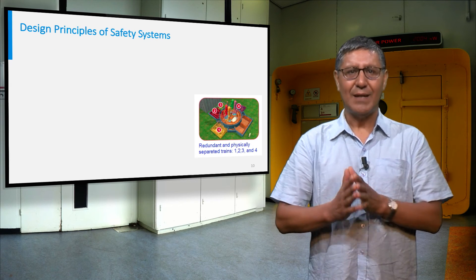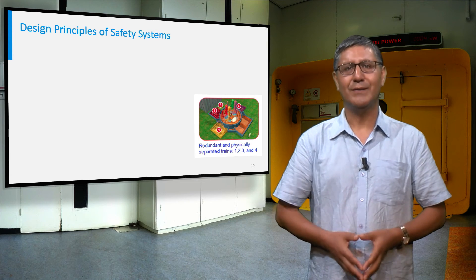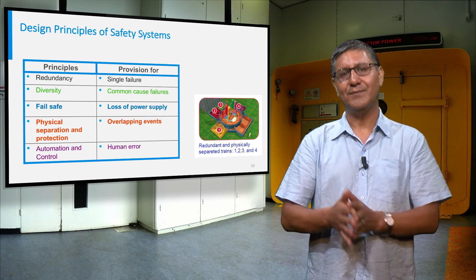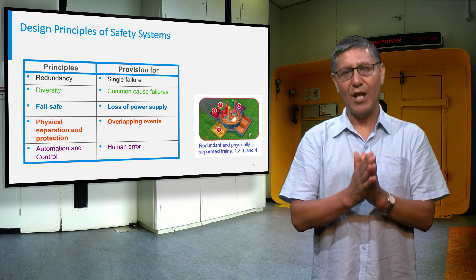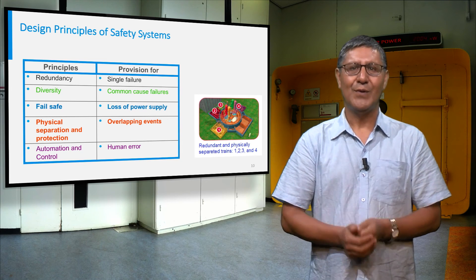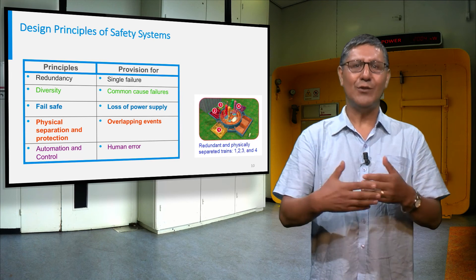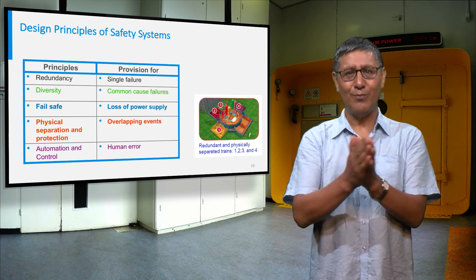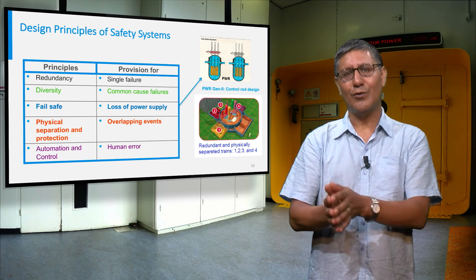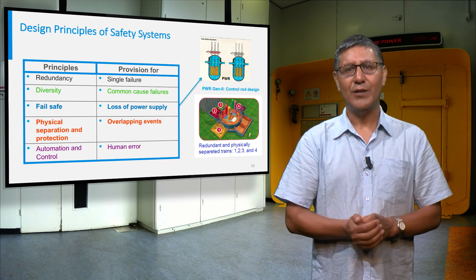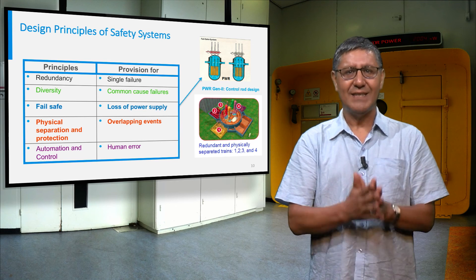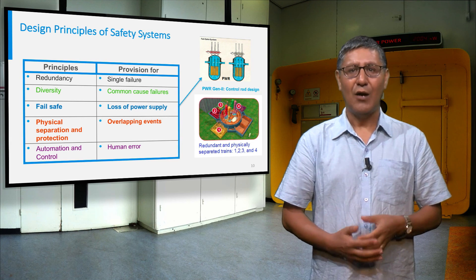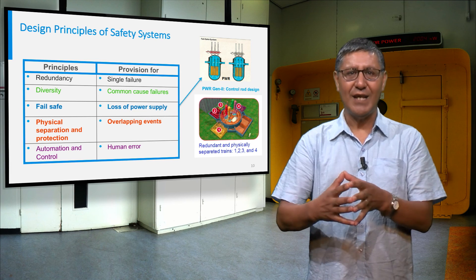Safety systems are subjected to higher design requirements. The main design principles and their purpose are listed on this slide. Redundancy is helpful in case of single failure, while diversity in design is needed to improve resilience against common cause failures. The fail-safe principle helps in case of loss of power supply, for example for the control rods of a nuclear reactor core. Physical separation is essential against overlapping events such as flooding. Finally, automation in the nuclear power plant reduces the amount of human errors.